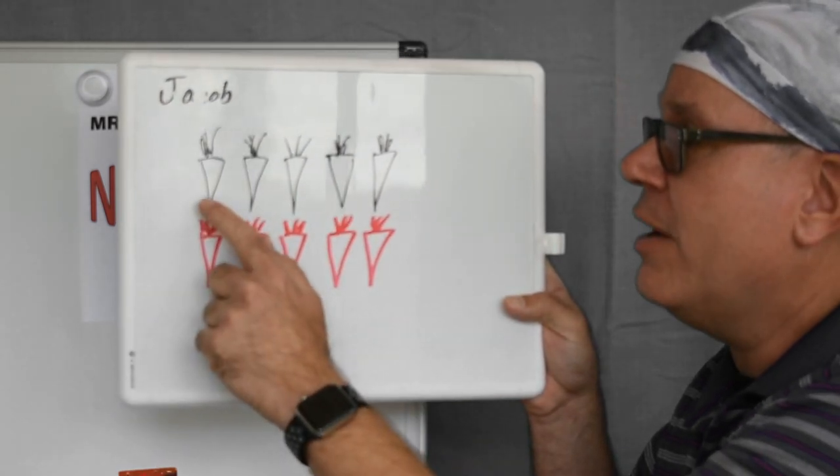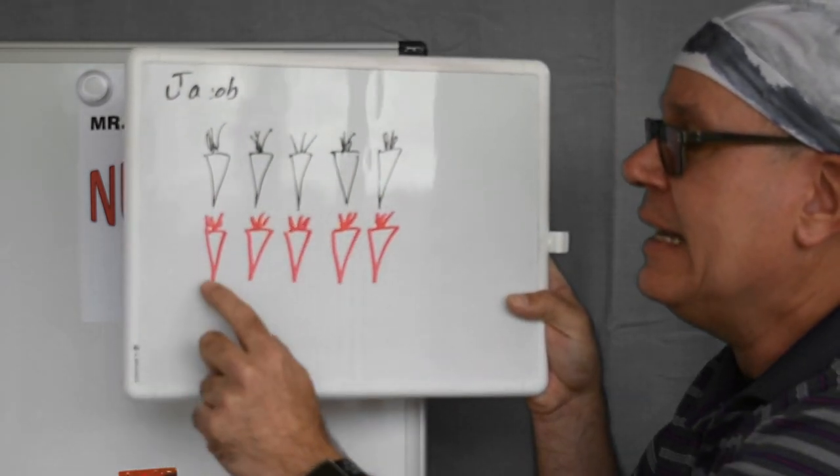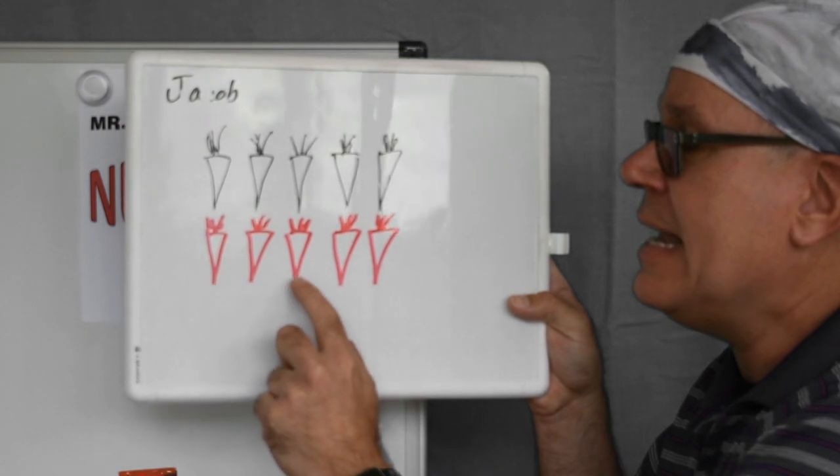So I counted on from here. So I had one, I know it was five, and I counted on six, seven, eight, nine, ten.